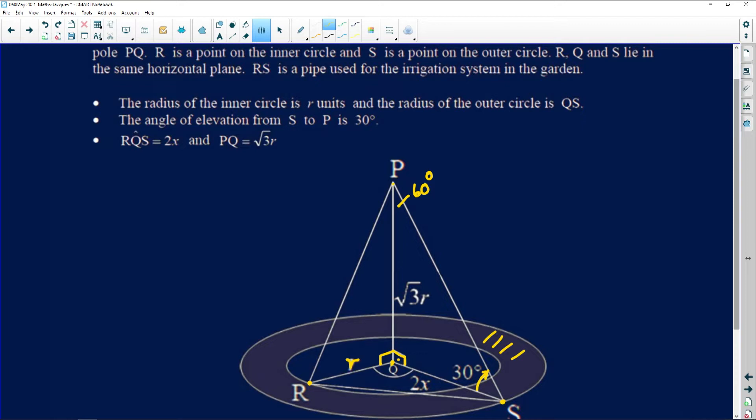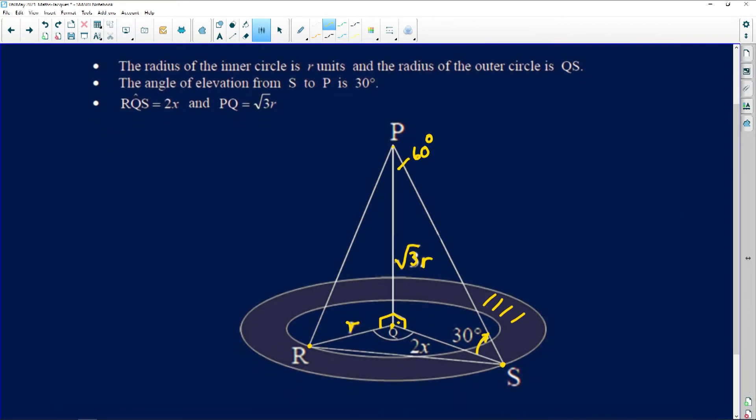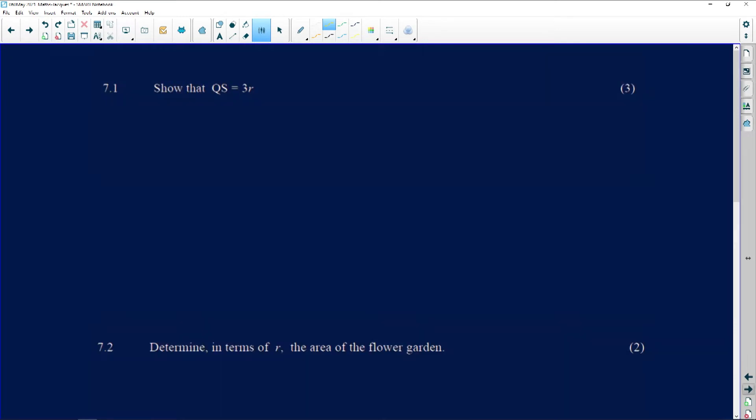RQS is 2X. So this angle here, that 2X has got to do with the angle. And PQ, which is this vertical pole, is root 3 multiplied by R. Now let's see what is the first question they're going to ask us.